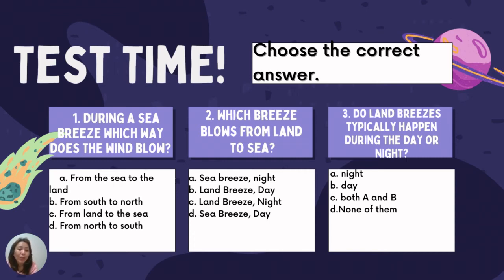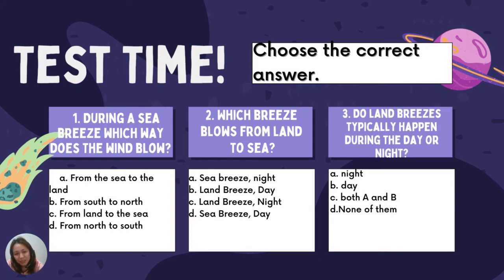Question number one: During a sea breeze, which way does the wind blow? A — from the sea to the land, B — from south to north, C — from land to the sea, D — from north to south. The answer is A — from the sea to the land.